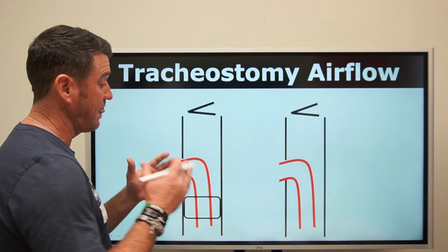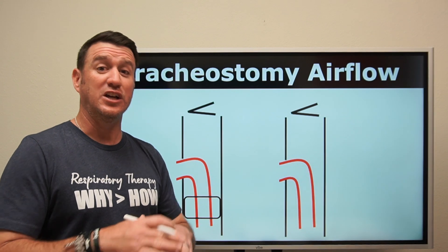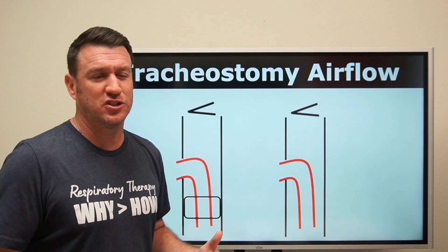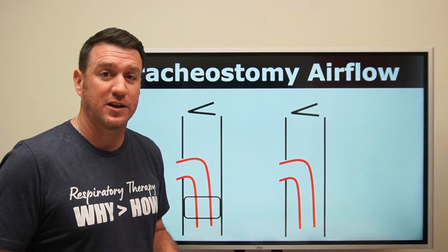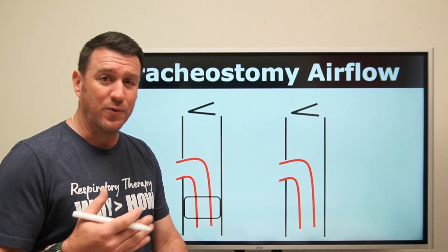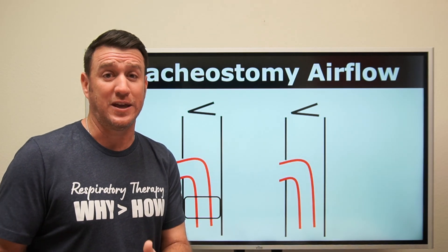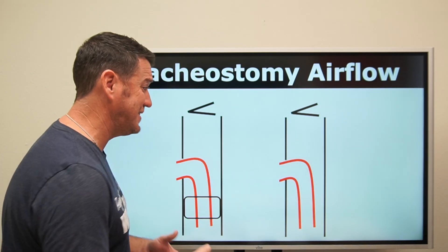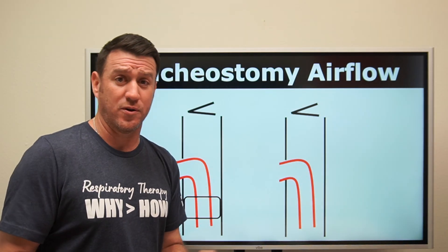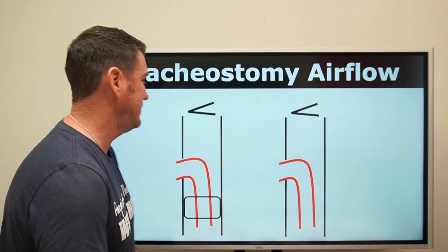Now let's talk about speaking valves, but before we get into speaking valves we first have to understand normal airflow in and out of a tracheostomy tube. When we're talking about speaking valves, you're not going to be talking about them with an endotracheal tube — it's going to be purely a tracheostomy tube situation. So that's clue number one: when somebody's talking about a speaking valve, you know that patient has a tracheostomy tube.